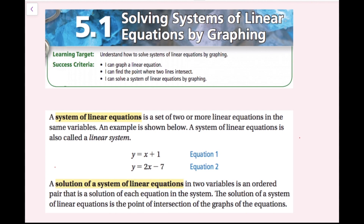A system of linear equations is a set of two or more linear equations in the same variables. A system of linear equations is also called a linear system. A solution of a system of linear equations in two variables is an ordered pair that is a solution of each equation in the system. The solution of a system of linear equations is the point of intersection of the graphs of the equations.